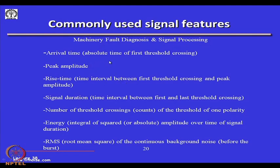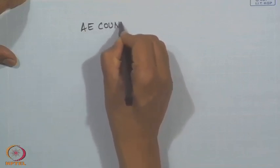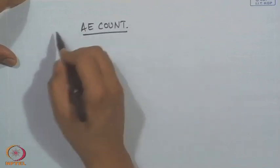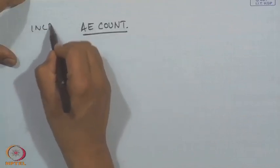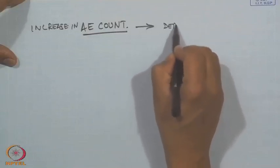Arrival time is the absolute time of the first threshold crossing; peak amplitude is the maximum; rise time is the interval between the first threshold and peak amplitude; signal duration is the time interval between first and last threshold crossing; number of threshold crossings are the AE counts. AE counts were earlier used as a method of detecting whether an acoustic event has happened, and an increase in AE count represents a defect in the structure.